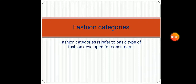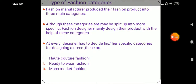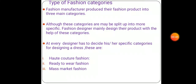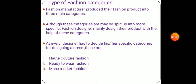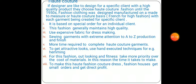Types of fashion categories: fashion manufacturers produce their fashion products into three main categories. Although these categories may be split up into more specific categories, fashion designers mainly design their products with the help of these three categories, and every designer has to decide their specific category for designing a dress. These categories are: first, haute couture fashion; second, ready-to-wear fashion; and third, mass market fashion.